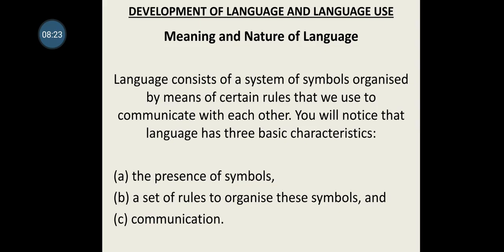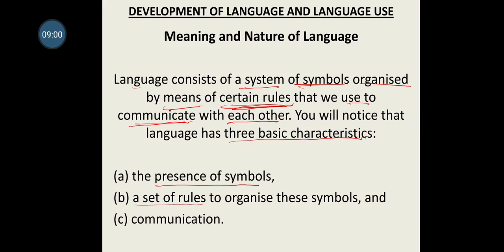Development of language and language use. Firstly, the meaning and nature of language: language consists of a system of symbols organized by means of certain rules that we use to communicate with each other. Any language — Hindi, English, Chinese, Punjabi, Urdu — has three basic characteristics: symbols, a set of rules by which those symbols are organized, and communication based on that organization.